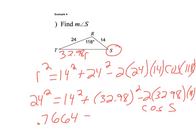So I have 0.7664 equals cosine S and now I'll take the inverse cos of both sides. So the inverse cosine of that answer is 39.97. So inverse cosine of 0.7664, I get 39.97 degrees.